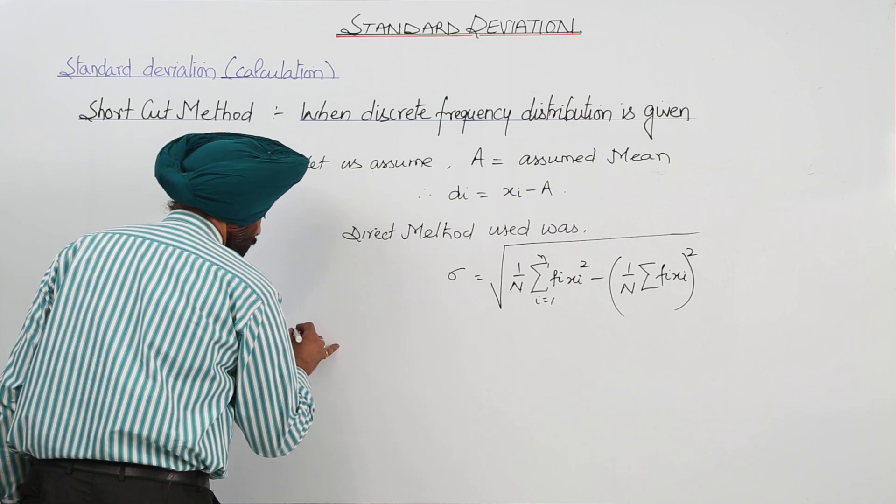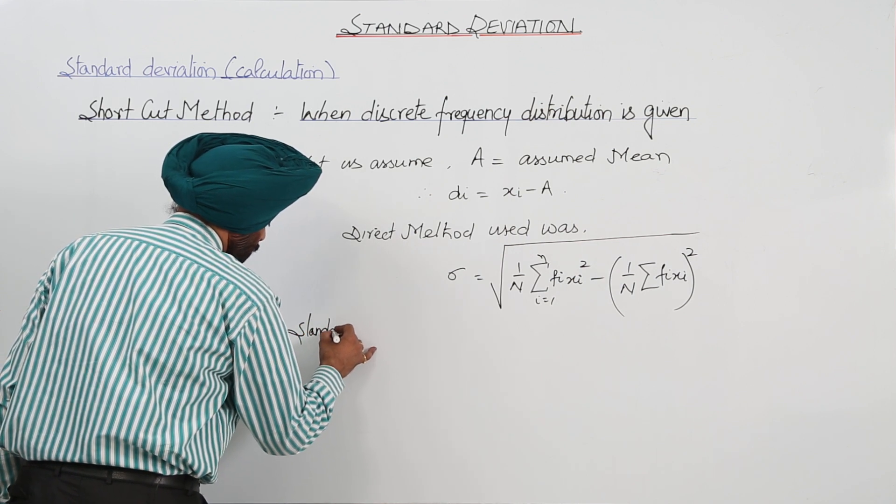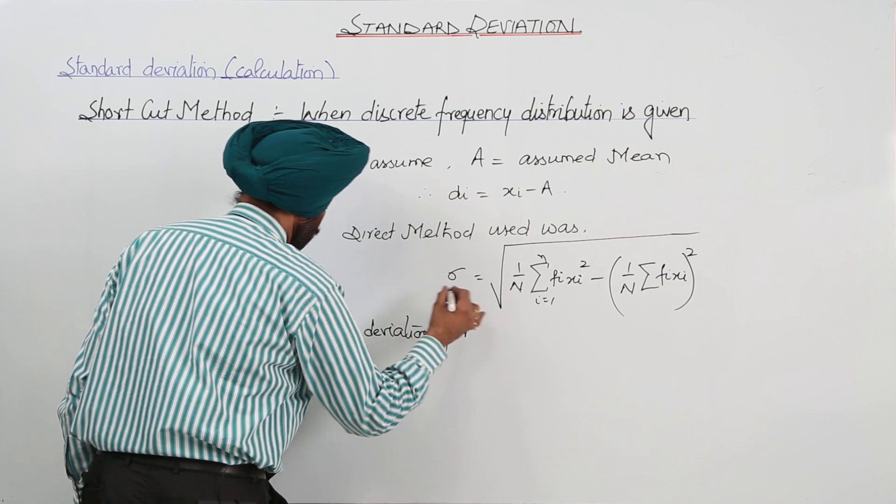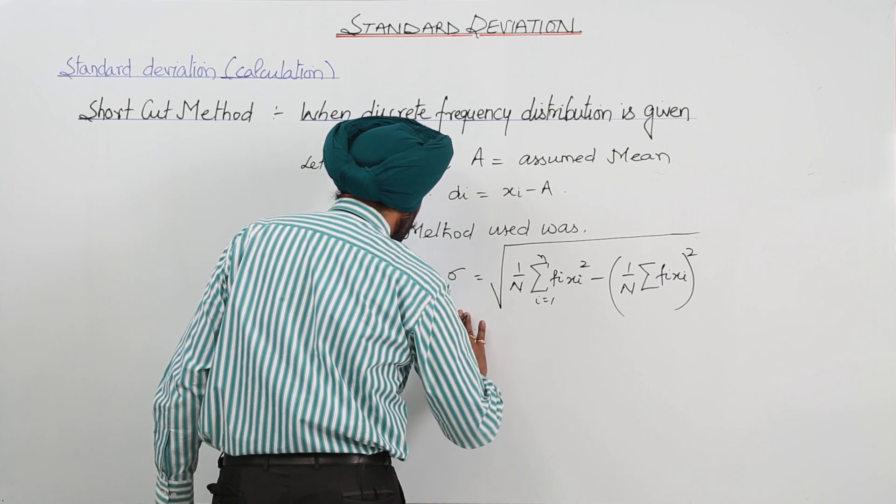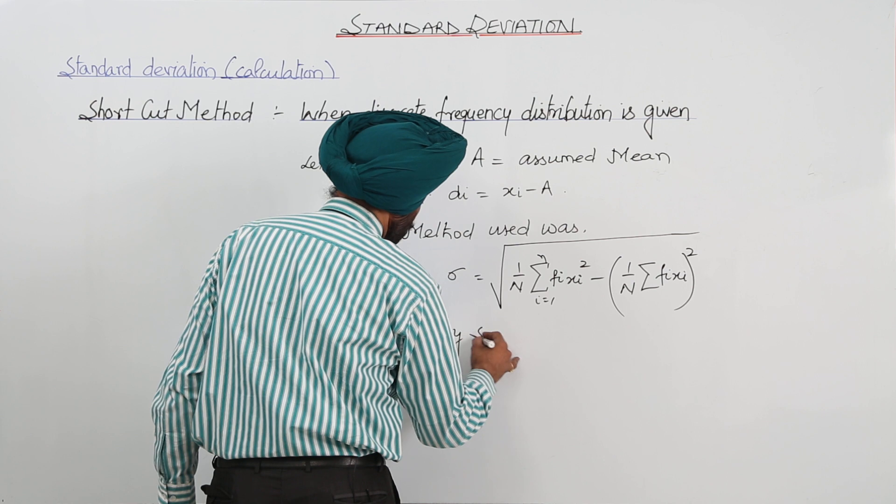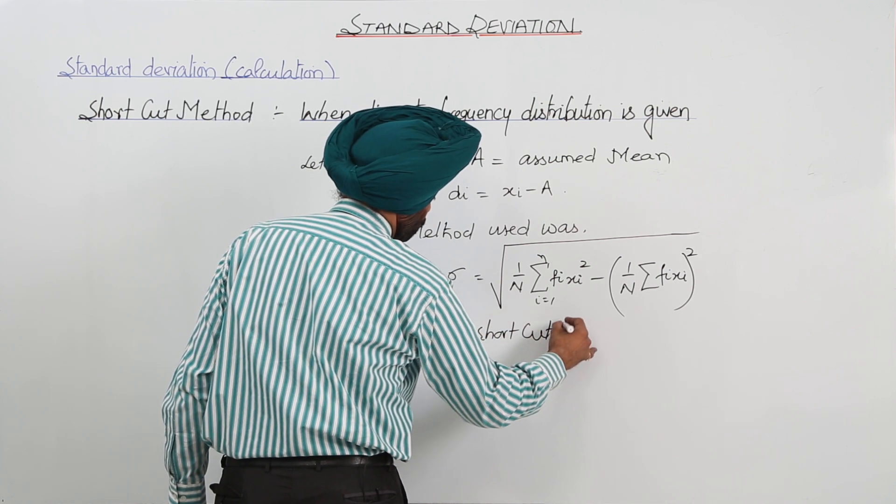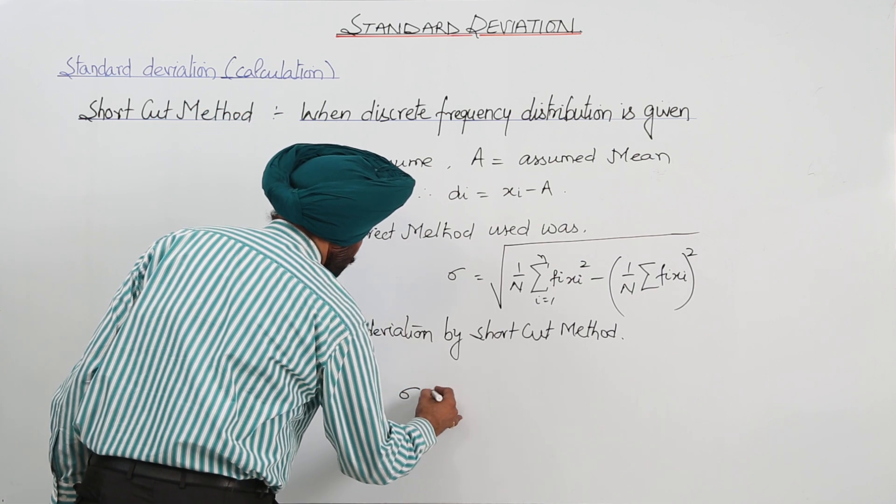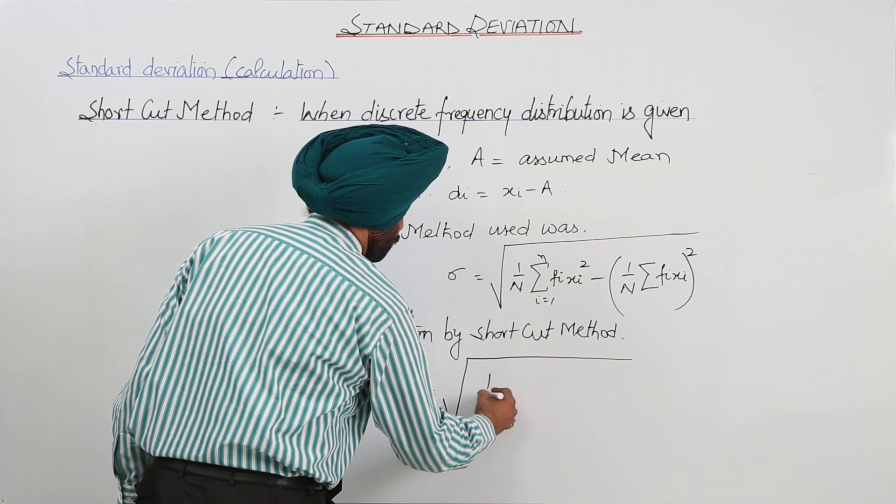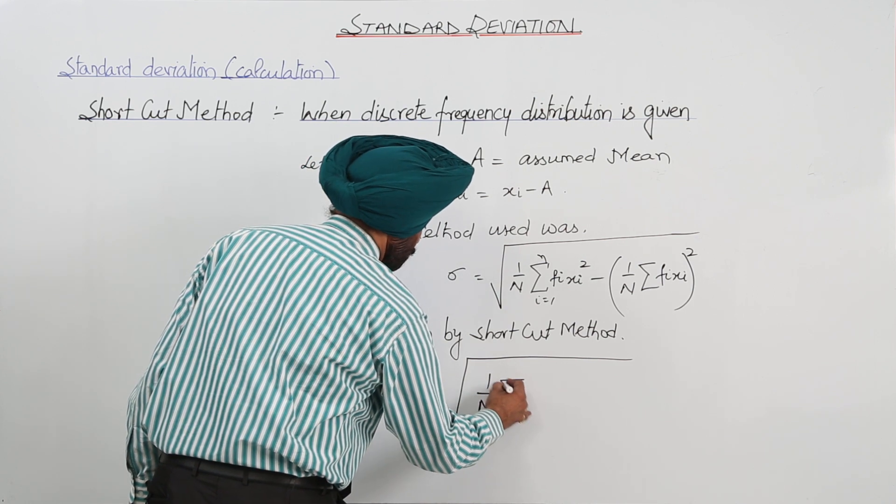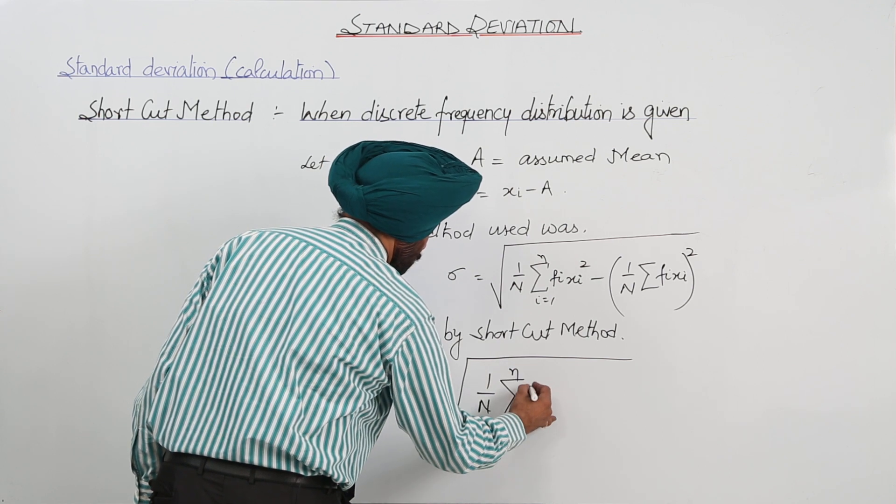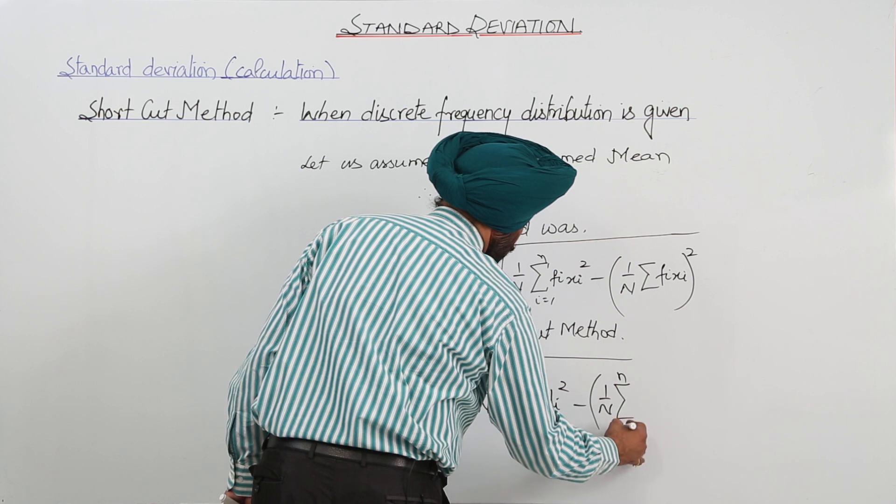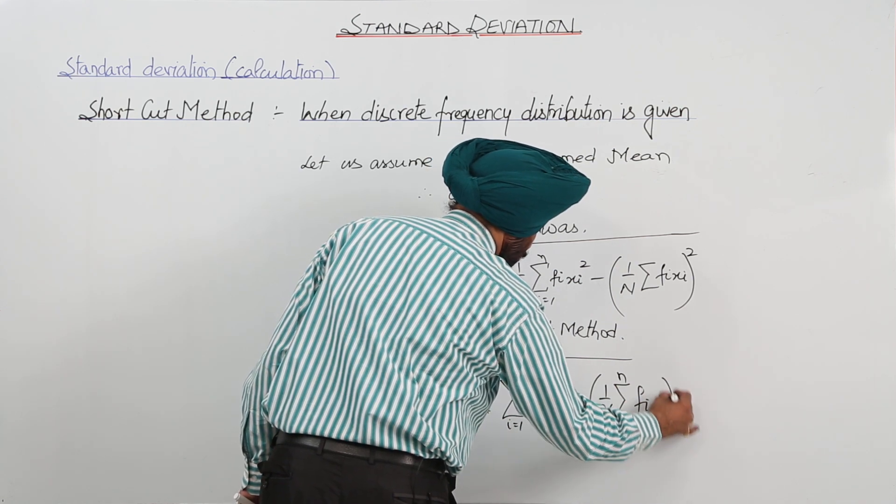Standard deviation, let it be by shortcut method. Standard deviation by shortcut method. What we can write it? We can write it is equal to square root 1 upon N submission for FI DI square minus 1 upon N FI DI whole square.